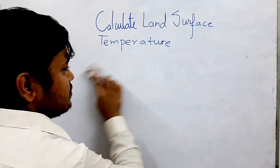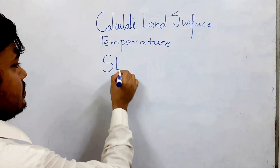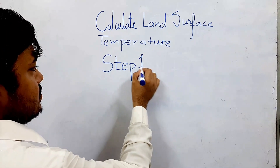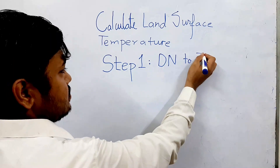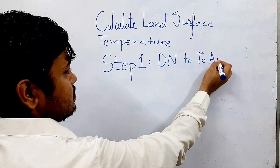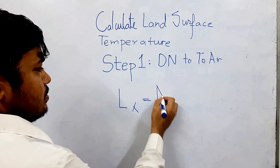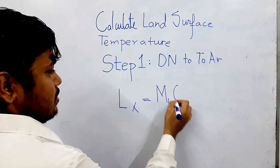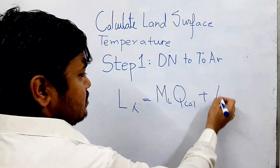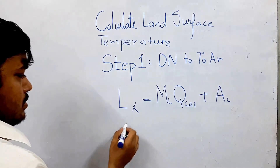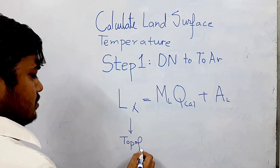In step 1 we will calculate top of atmospheric spectral radiance from the digital number of the bands. Step 1 is to convert DN numbers to TOAR, which is top of atmospheric spectral radiance. The formula to calculate is L lambda equal to the multiplier multiplied by Q calc plus the additive vector.